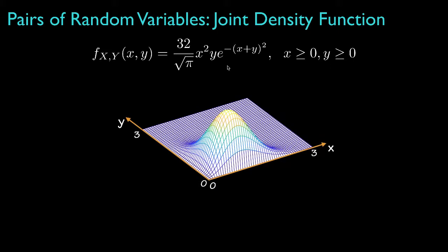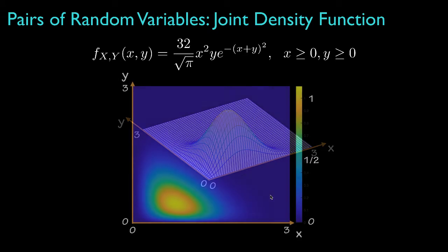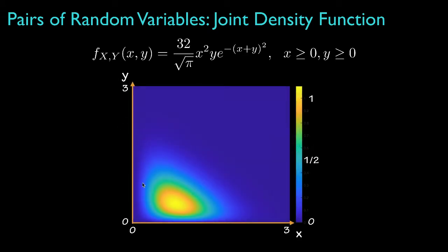Now, one way to visualize a two-dimensional density is by a two-dimensional mesh plot or surface plot like the one that's shown here, or we might show the density as a false color plot like the one shown here.